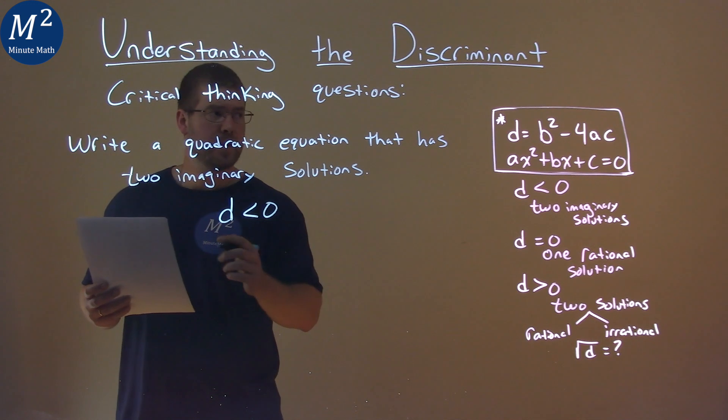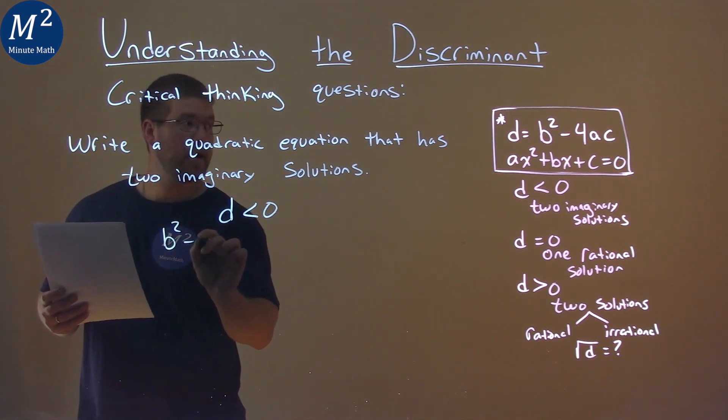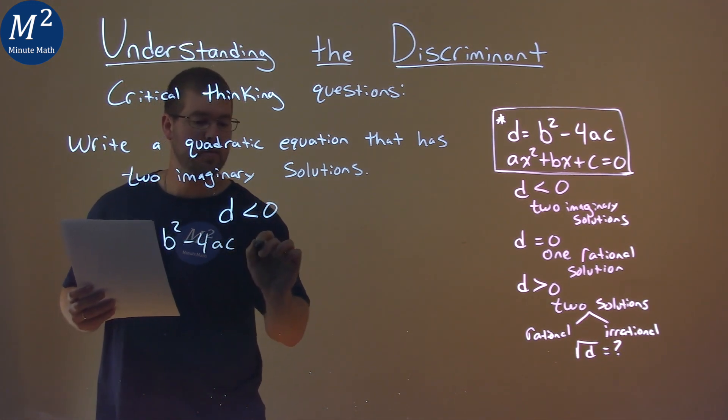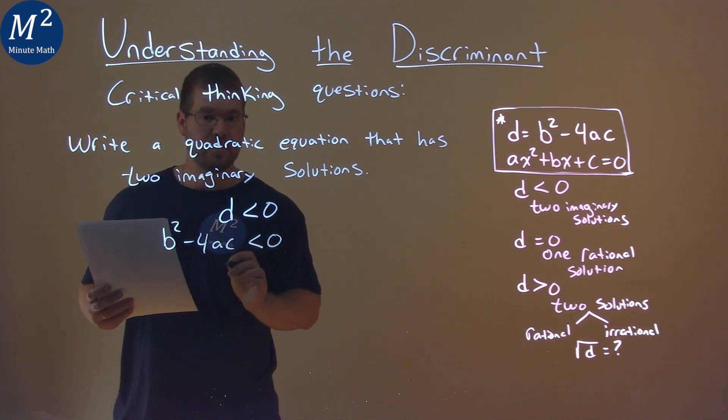Well, our equation for the discriminant is b squared minus 4 times a times c, and that has to be less than zero. Well, let's go plug in values for b, a, and c that make this less than zero.